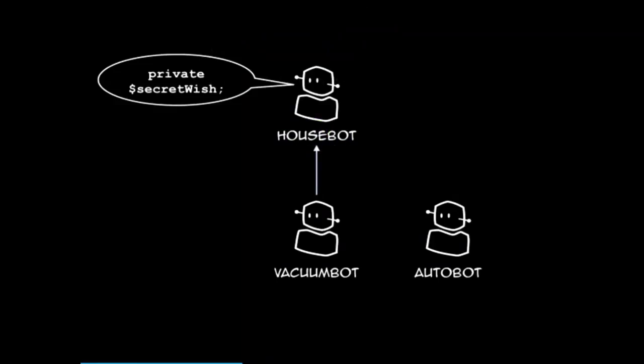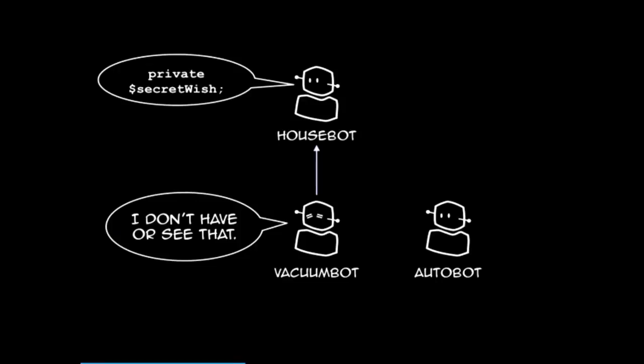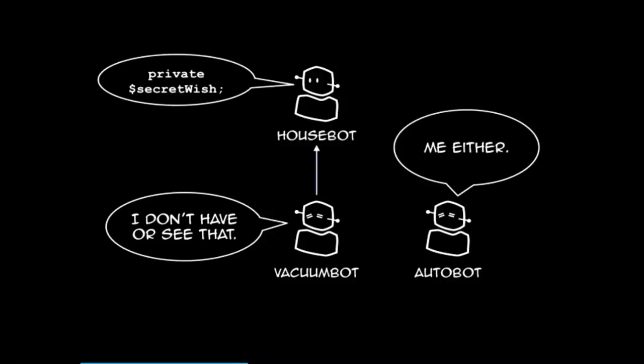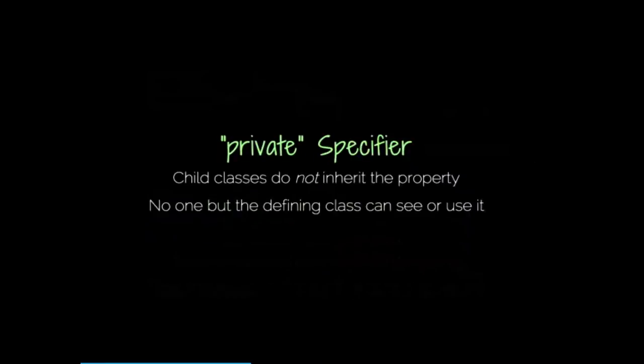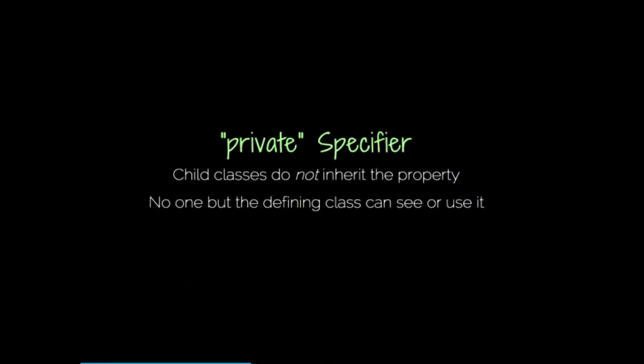Now let's have a private one. HouseBot has a private class variable called 'secret_wish.' VacuumBot doesn't have or see that — doesn't see it at all. Neither does AutoBot. Private specifiers say that child classes do not inherit the property, and no one else but the defining class can see or use it.